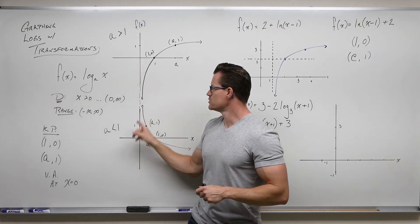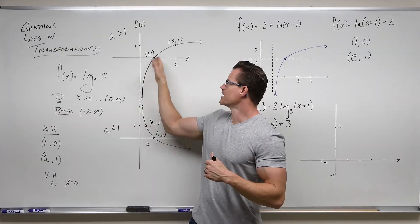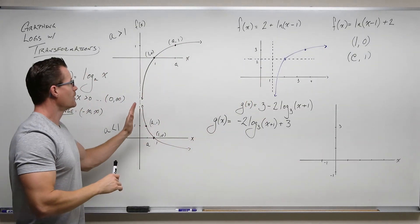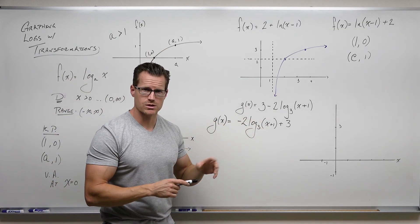So we would say this as negative 2 log base 3 of x plus 1 plus 3. So now that we have that in order, we're identifying that it is a logarithm and it has a base of 3. Right now in your head, you should have one of these two pictures. If a is more than 1, which it is, it's 3, we're going to get this look until we reflect it. So it should be based on this look. So let's think through that. That looks like this, and then let's identify what our key points are.